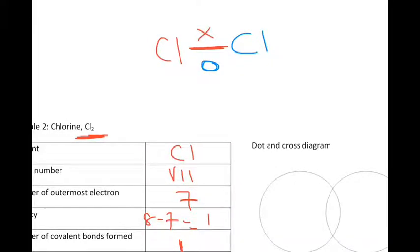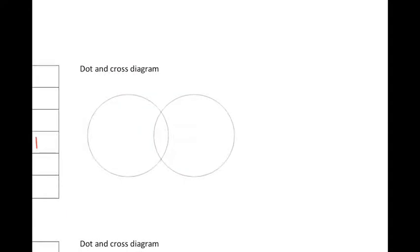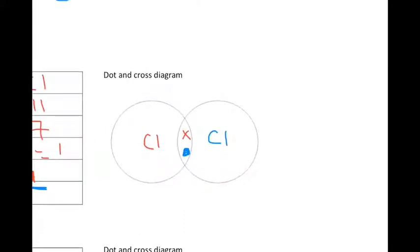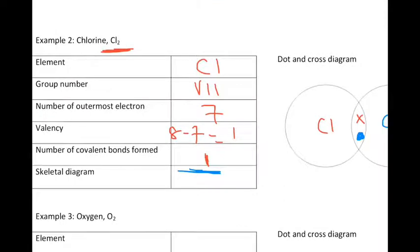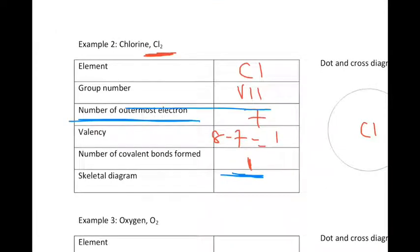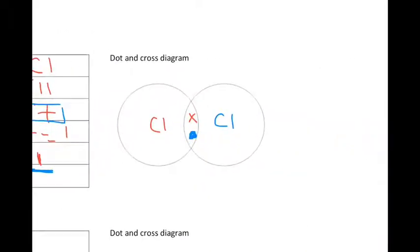So once I have this skeletal diagram, now I can draw the dot and cross diagram. Chlorine red, chlorine blue. Chlorine red contributes one electron, chlorine blue contributes one electron. The shared electron pair is at the center — it's overlapping electron shells. Now remember that each chlorine should have 7 outermost electrons. So chlorine red already has 1 here, so it should have 7 in all: 1, 2, 3, 4, 5, 6, 7. It has 7 electrons of its own — you can see 7 red crosses.